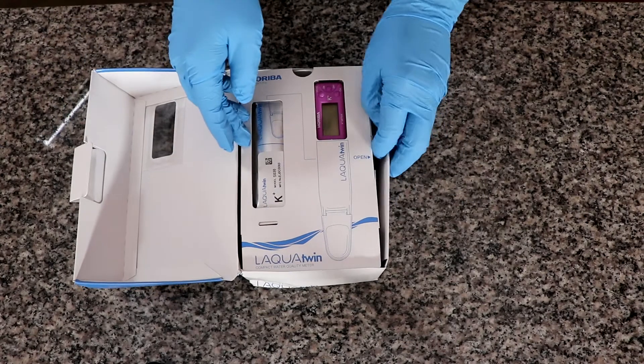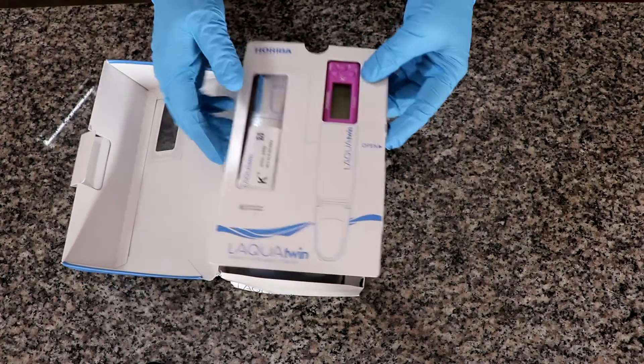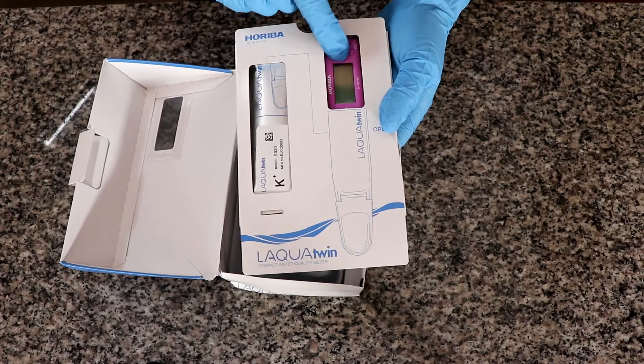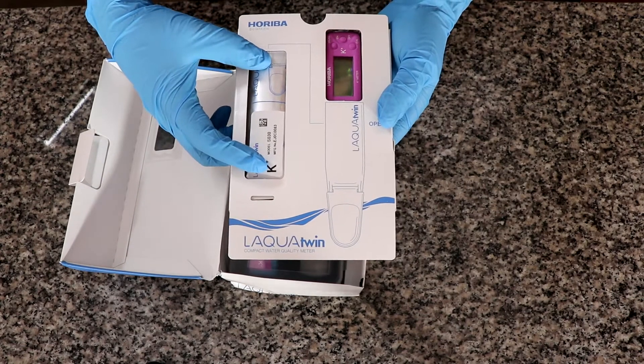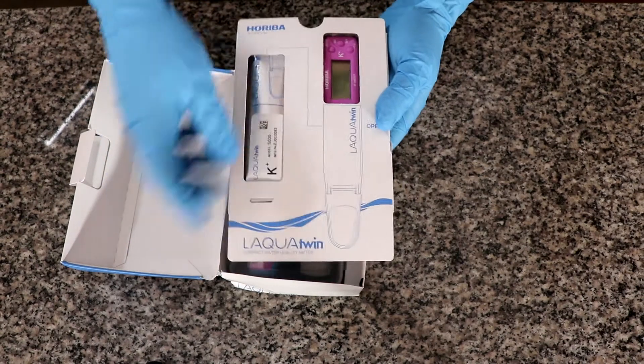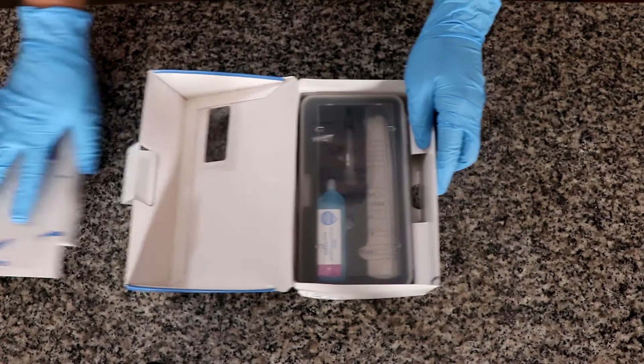First of all we are getting the electronic unit and this is where the ion selective electrode actually is, which is this part here. I'm going to set this apart for the moment.